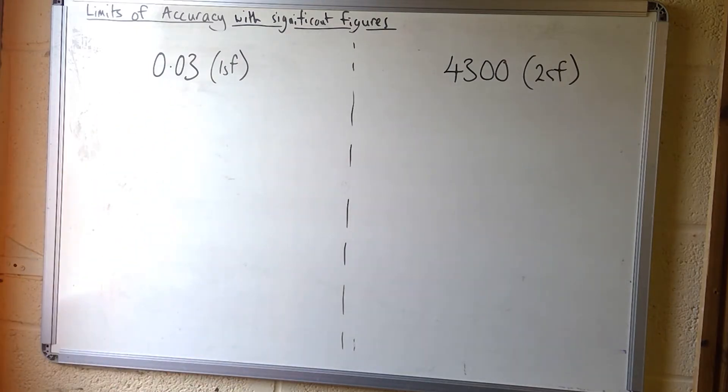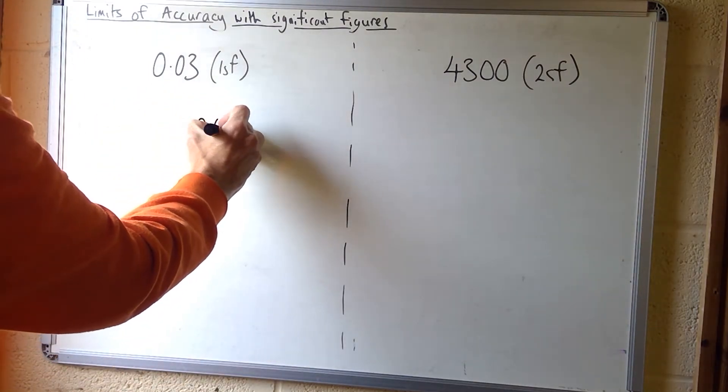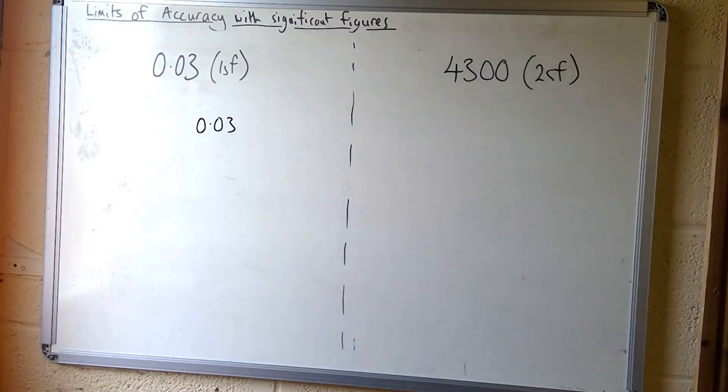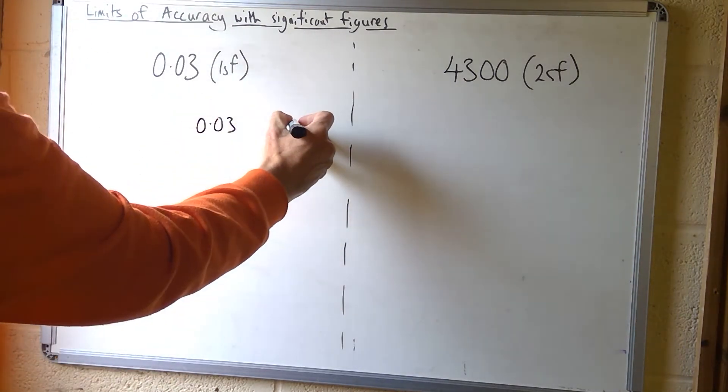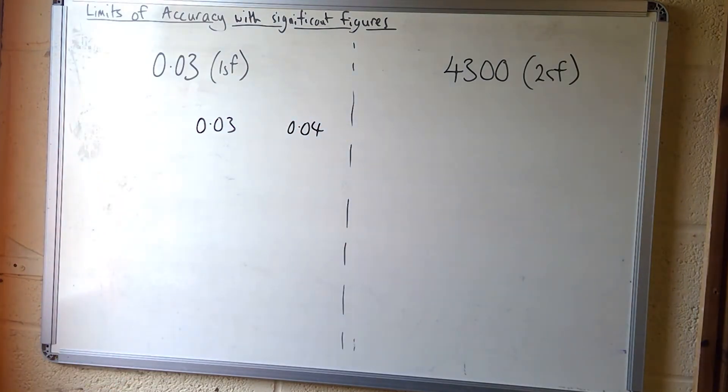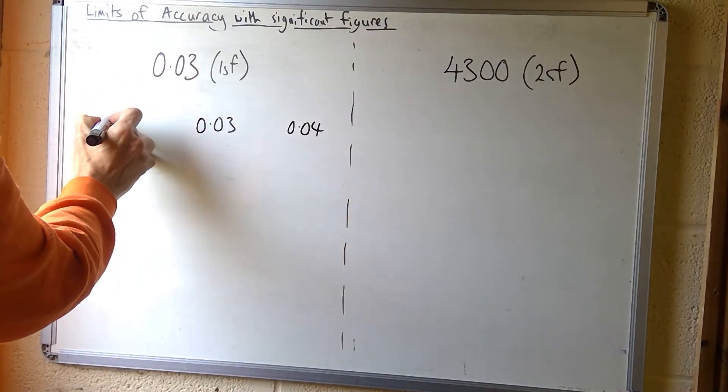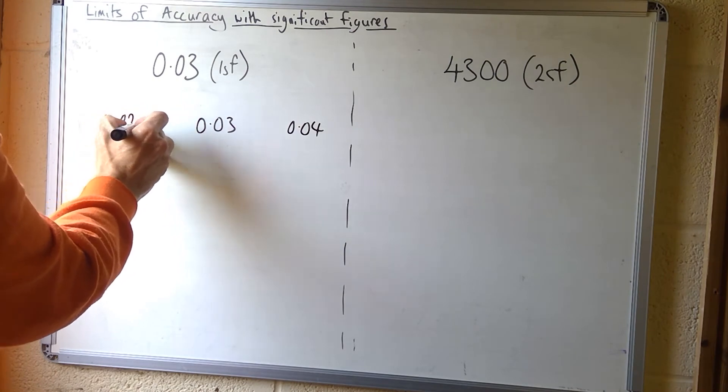To find its upper and lower bounds, we say it's rounded to 0.03. The next number it could have been rounded to, to one significant figure, would have been 0.04, and the previous one 0.02.